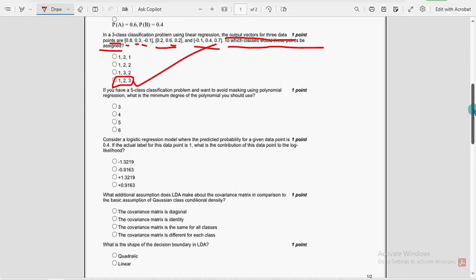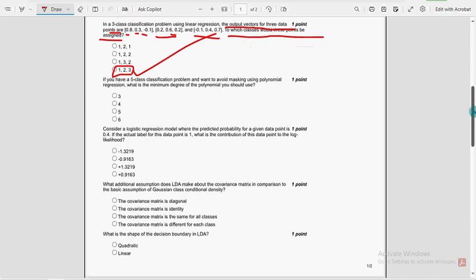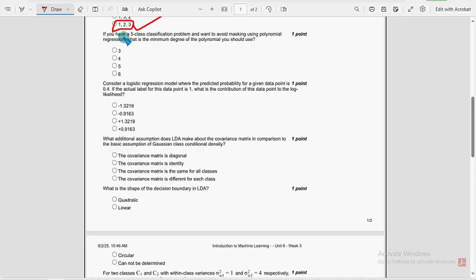Fourth question. If you have a five class classification problem and want to avoid masking using polynomial regression, what is the minimum degree of polynomial you should use? For fourth question, option B, second option, 4 is the probable solution.